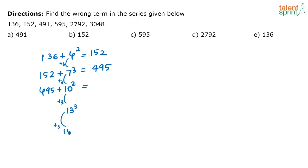So 495 plus 10 squared that is 595. Now 595 plus 13 cube that is going to be 2792 and 2792 plus 16 squared is going to be 3048.